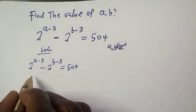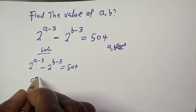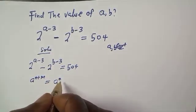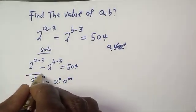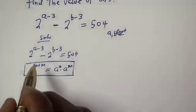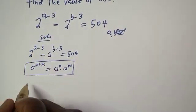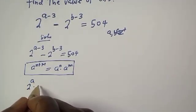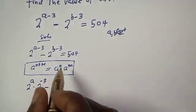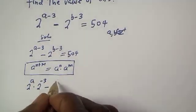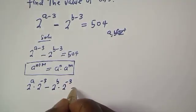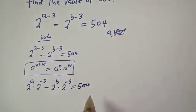Take note of this exponential rule: if you have a raised to power n plus m, this is equal to a raised to power n multiplied by a raised to power m. So, 2 raised to power a minus 3 can be written as 2 raised to power a multiplied by 2 raised to power minus 3, minus 2 raised to power b multiplied by 2 raised to power minus 3, is equal to 504.